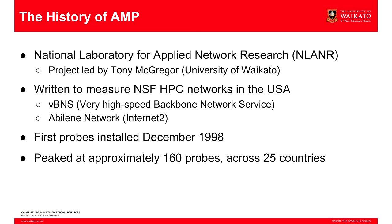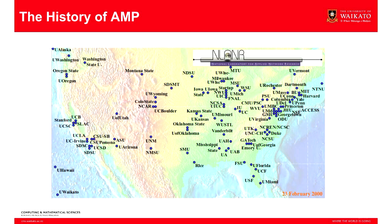The probes were later updated to 2.5 gigabit in 1999, and probes were also put onto the Internet2 network at 2.5 gig, which later increased to 10 gigs plus. At its peak, the aim was one AMP probe in each high-performance center, peaking around 160 probes spread across many countries, mostly in research and education networks. They all tested each other in a full mesh so that every path on the network was measured in multiple ways.